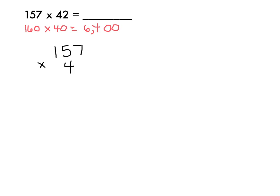157 times 42. And again, with partial products, I'm going to really think about the place value of each of these digits. I'm going to start by doing 100 times 40, which is 4,000.